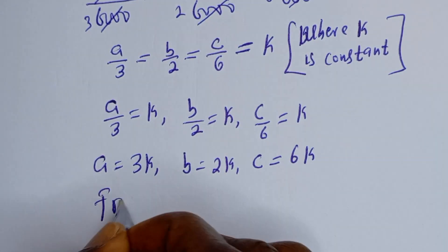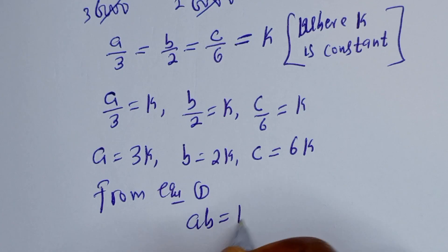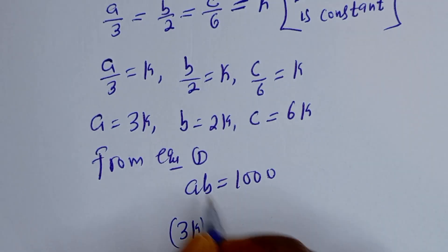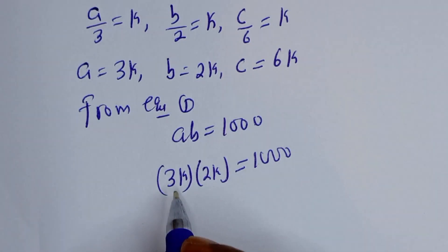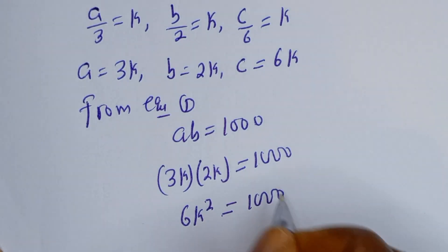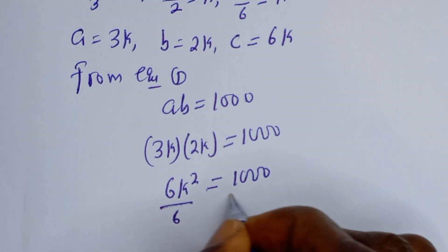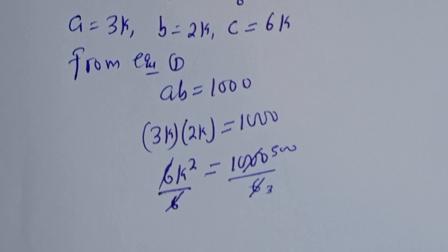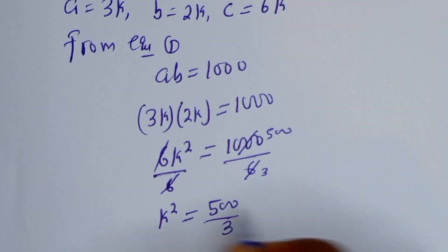From equation 1, A·B equals 1000. We know A equals 3K and B equals 2K, so 3K multiplied by 2K equals 1000. That is 6K squared equals 1000. Dividing both sides by 6, K squared equals 500 over 3. Let's call this equation star.